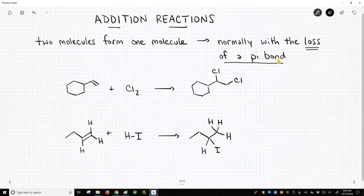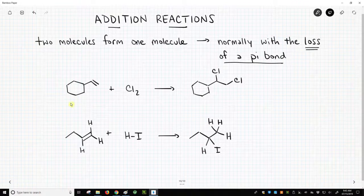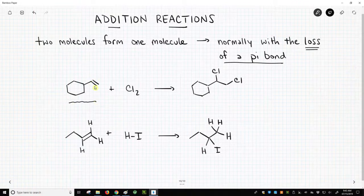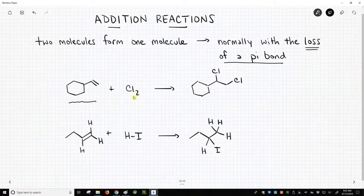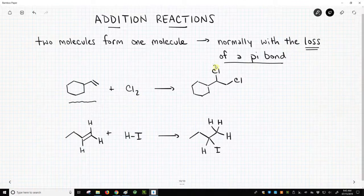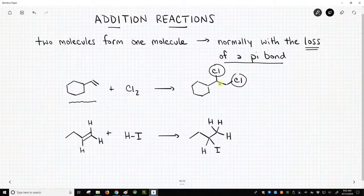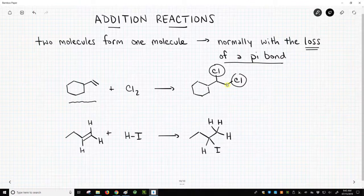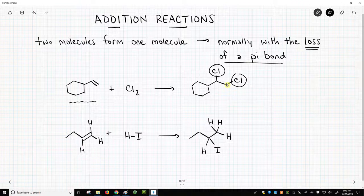Two examples are shown on the screen. Here we have an alkene. And this alkene, this carbon-carbon double bond, reacts in the presence of Cl2. And we have added these chlorines to the carbons which were formerly part of the pi bond. We lost the pi bond, and that pi bond was replaced with two sigma bonds, both of which happened to be to chlorine.